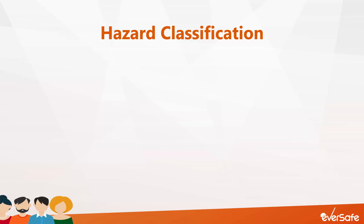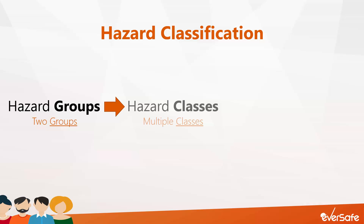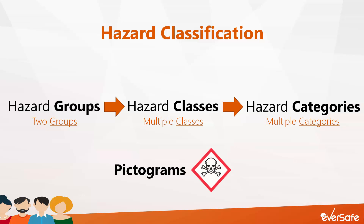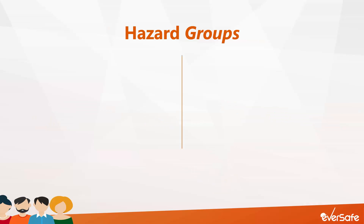WHMIS 2015 is a bit different in a few ways. First, hazards are broken down into two groups called hazard groups. Then within each group, there are several hazard classes, and within each class, there's at least one hazard category. And finally, rather than having symbols displayed with a black circle, we have what are referred to as pictograms — basically an image with a red diamond.